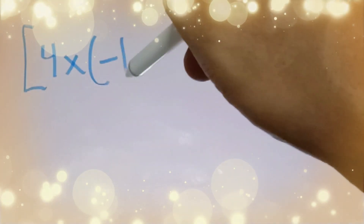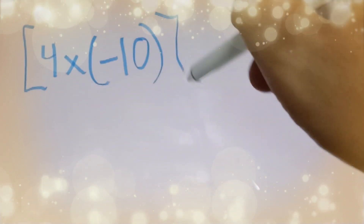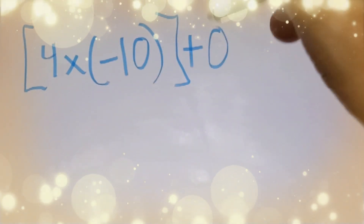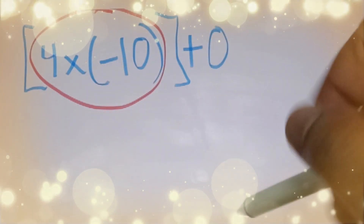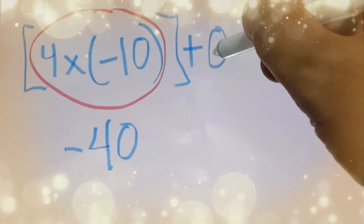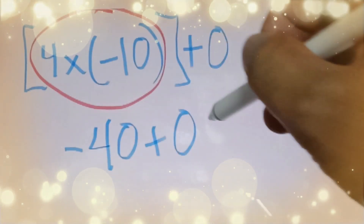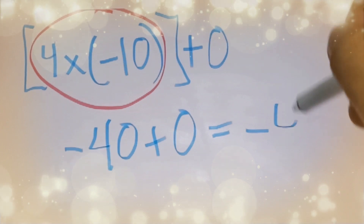For the third example: 4 times negative 10 plus 0. We simplify 4 times negative 10 first, which is negative 40. Plus 0, so the answer is negative 40.